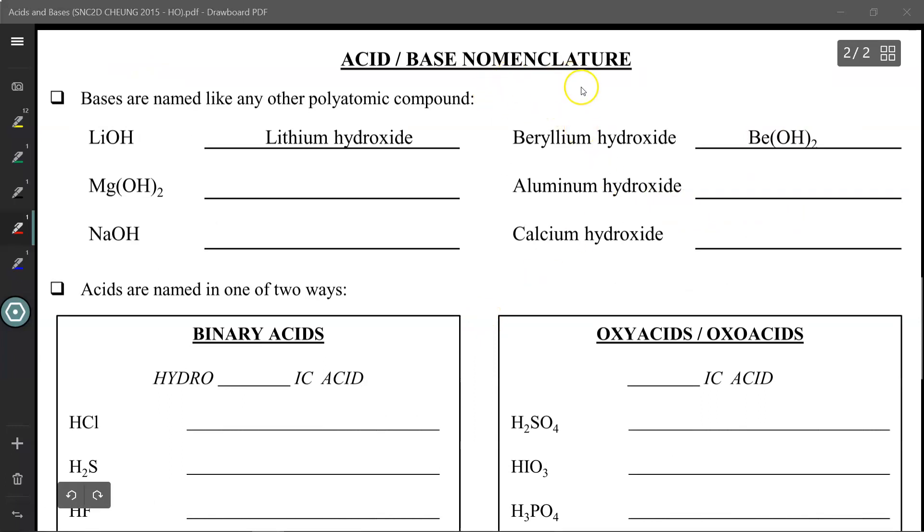When it comes to their nomenclature or naming them, bases are fairly straightforward as they follow the polyatomic naming conventions. Lithium hydroxide (LiOH), or beryllium hydroxide (Be(OH)2). Just make sure that you follow the zero-sum rule. Press pause and take a moment to fill up these four. When you're done, press play and we'll take it up together.